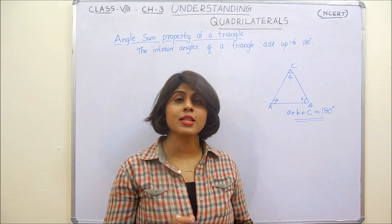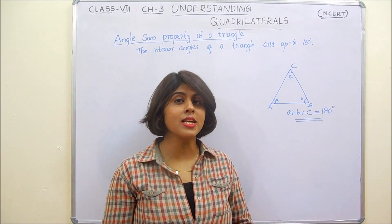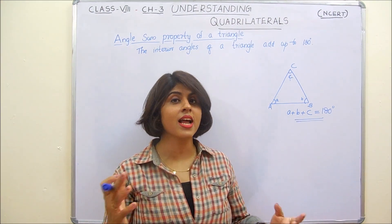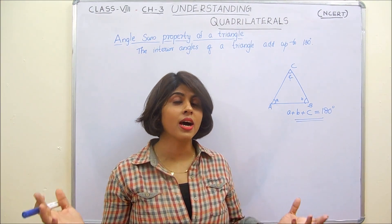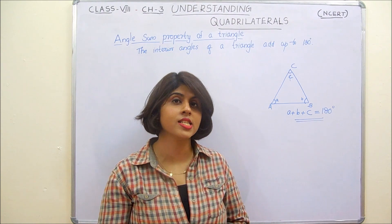we can say that A plus B plus C equals 180 degrees. Then what would be the sum of interior angles of other polygons?